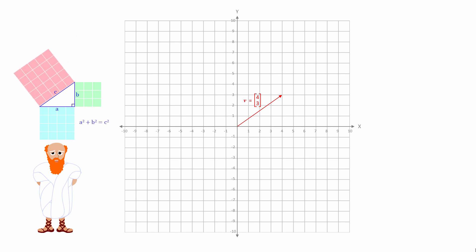This formula can be applied to the vector, which you can see is the hypotenuse of a right-angled triangle. If A is 4 and B is 3, then C is the square root of 4 squared plus 3 squared. C is equal to 5.